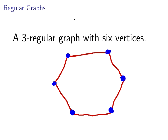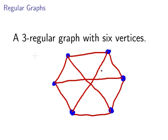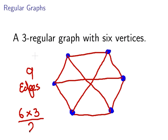To get a 3-regular graph, all I have to do is join two more vertices together. I'm going to join that one to there, that one to there, and that one over there. And altogether there are nine edges, because there are six vertices with a degree of three each, and dividing by two we have nine edges.